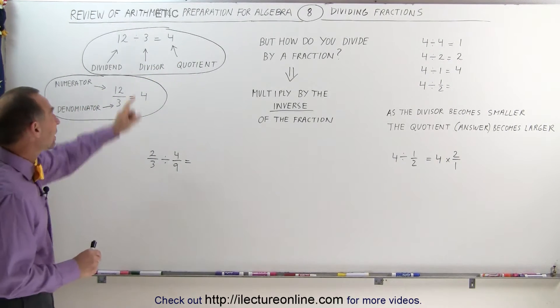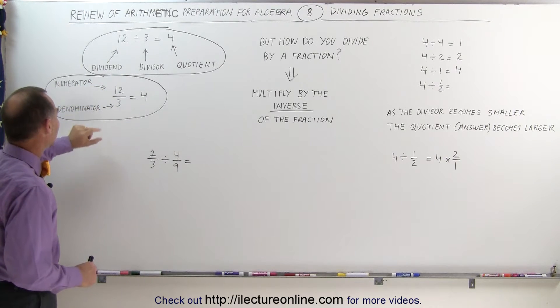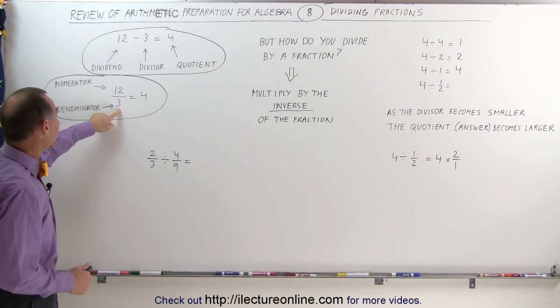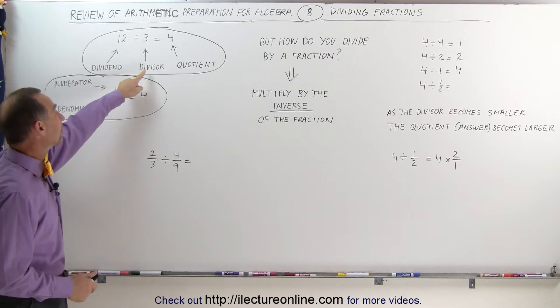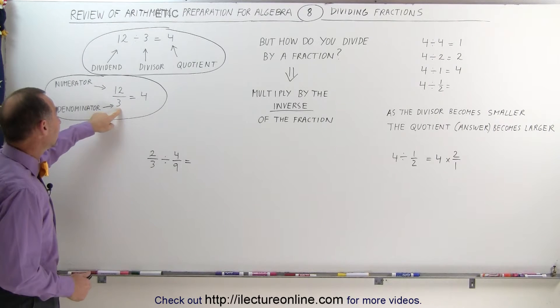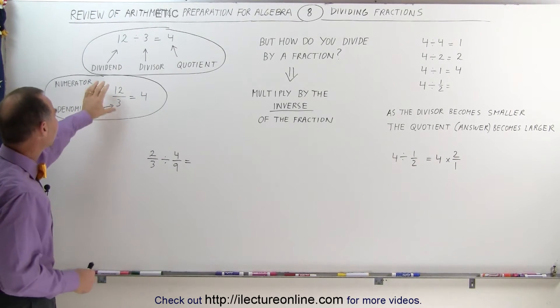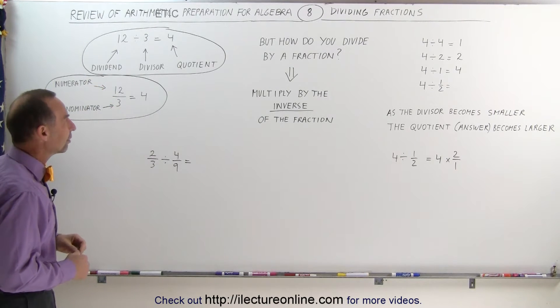Notice the similarity between that and the fraction. In the fraction, we call the number on top the numerator, which is really the dividend, and on the bottom, we call this the denominator, which is really the divisor. When we divide 3 into 12, we get the answer 4, which is the quotient. So that's the similarity between fractions and what they could potentially stand for.